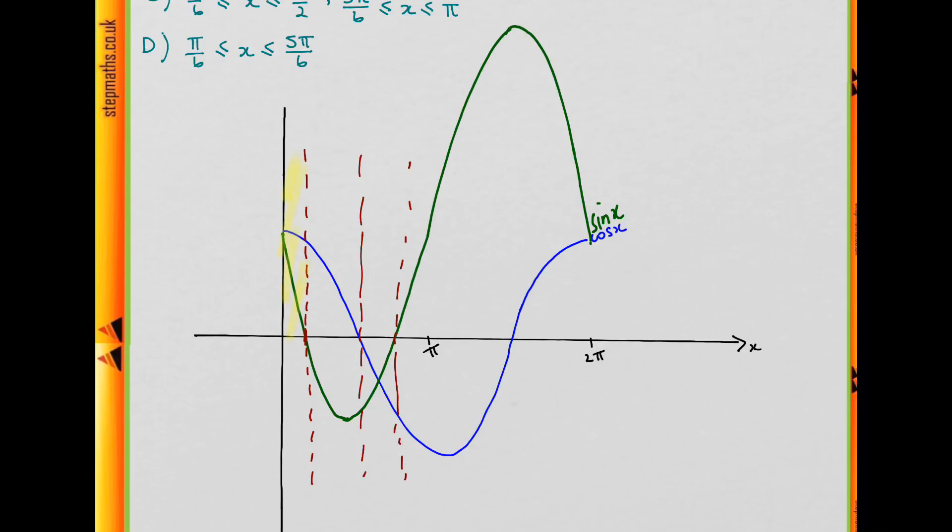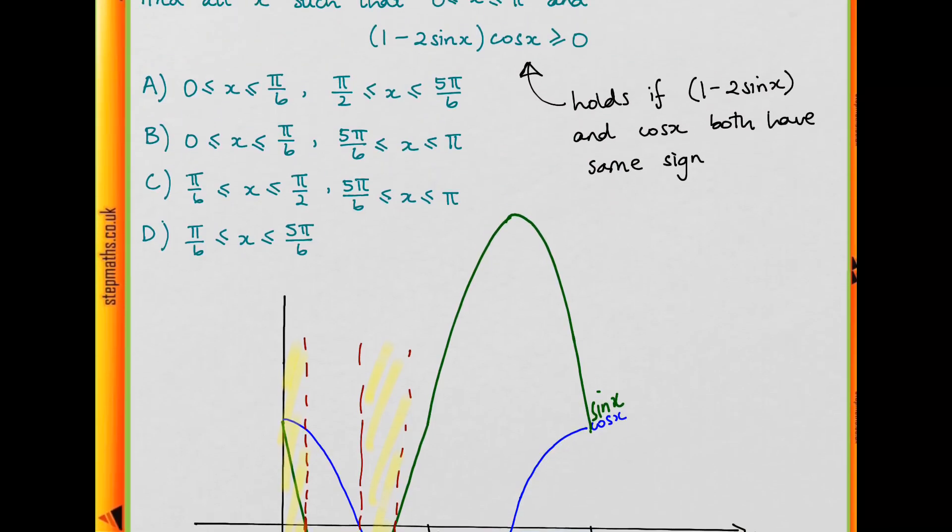So we want all of the x in here and in between these two lines here. So 0 up to something and then a strip before we get to π. And if we look, that matches option D.